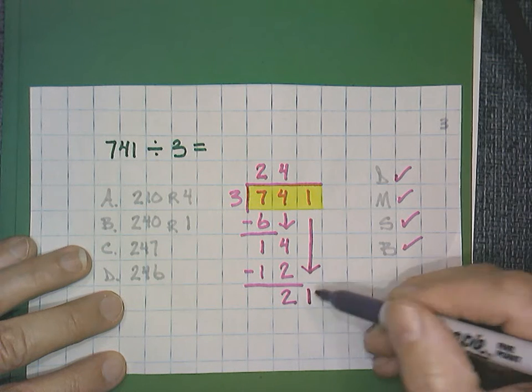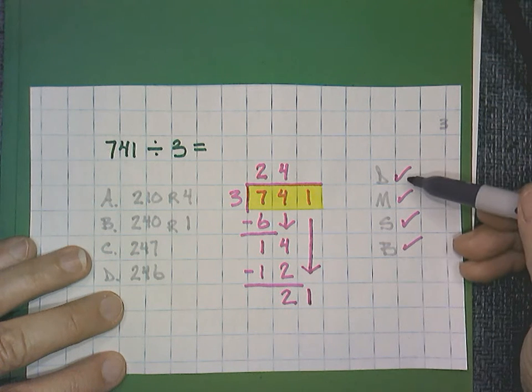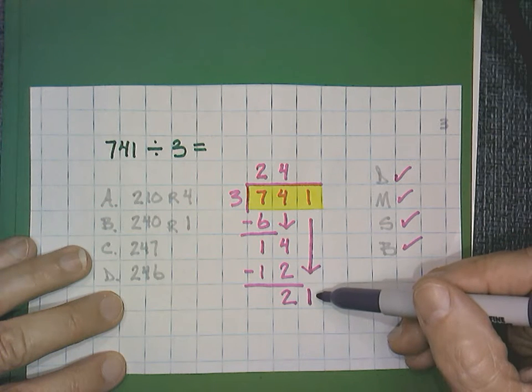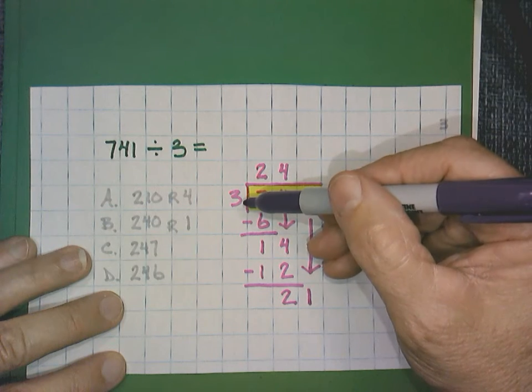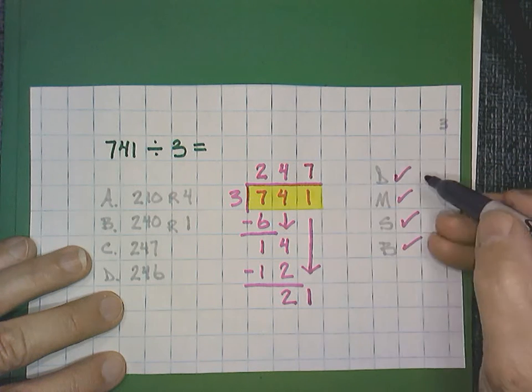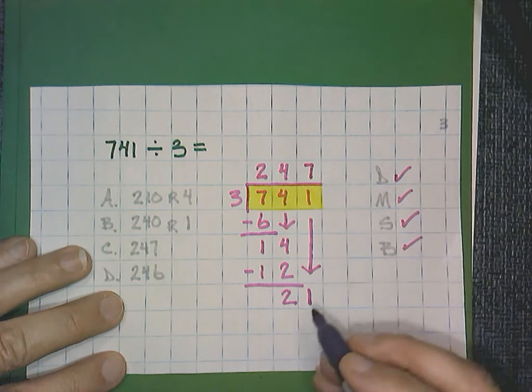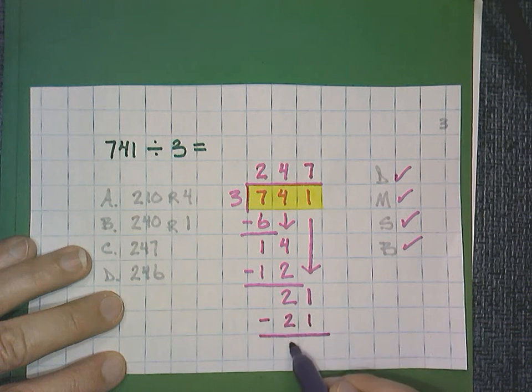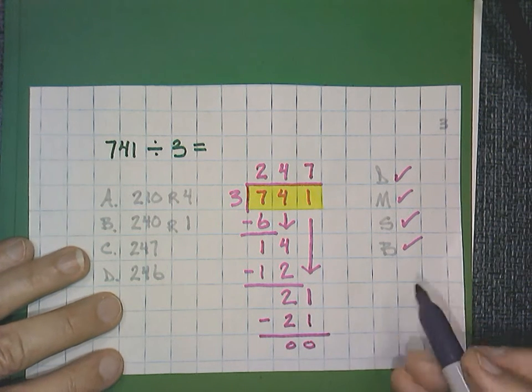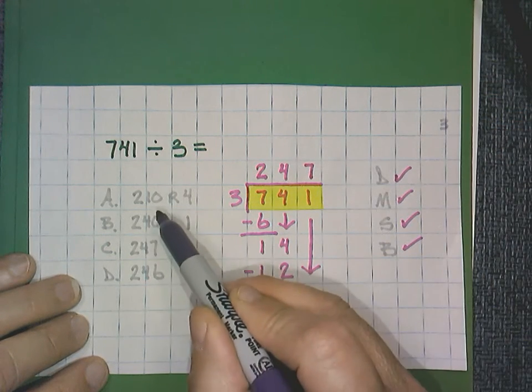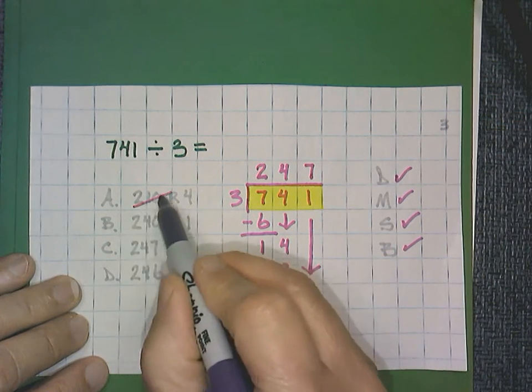We rewrite that 1. And now we start all over again. Remember, bring back and start over. 21 divided by 3. Well, that would be 7. That's our divide. 7 times 3 is 21. And we see that we do not have any remainder. So our quotient is 247, which would be answer C.